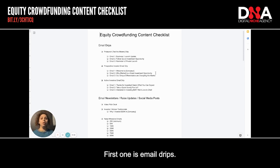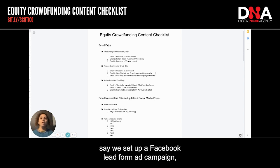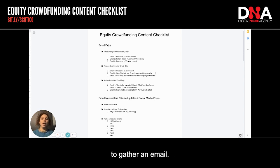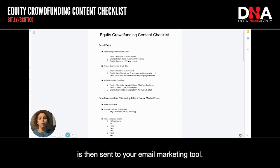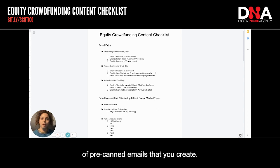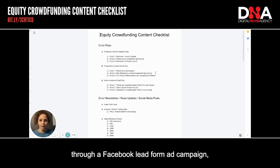First on the checklist is email drips. An email drip is an automated sequence of emails that occurs after a specific trigger. For example, say we set up a Facebook lead form ad campaign where we are running ads to gather an email. Someone clicks on the ad, puts in their email — that is the trigger. The email is then sent to your email marketing tool, and once they are added to a list, they go through a specific series of pre-canned emails that you create. This is great for converting very cold leads from a Facebook lead form ad campaign.